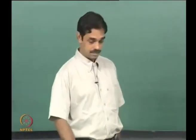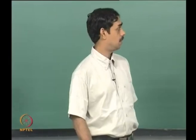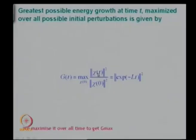We came up with the parameter G, which is the norm of the state vector at some time t divided by the norm at time t equal to 0, which we showed is equal to the norm of the evolution operator. Then we said we will maximize this for all initial conditions and then maximize it for all times, and then we get the maximum growth factor.